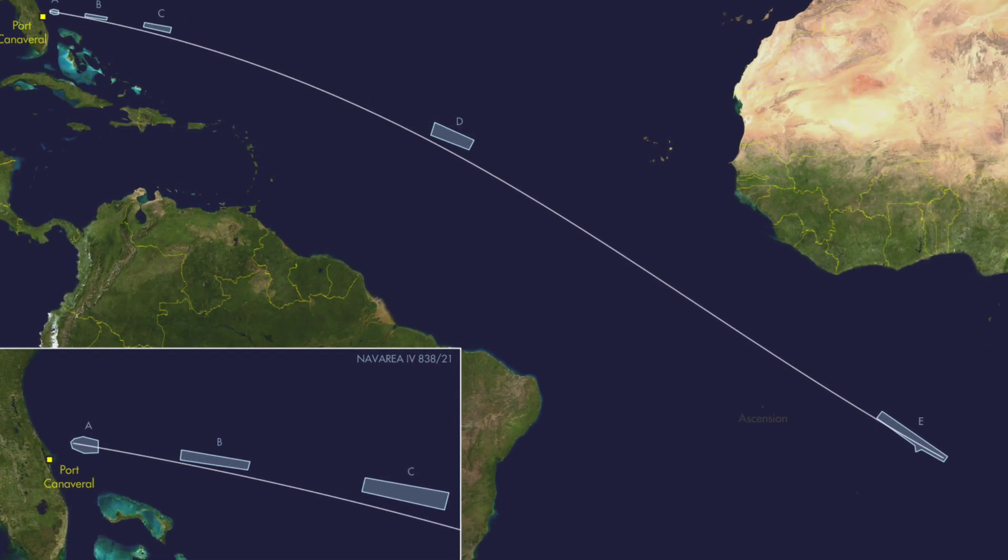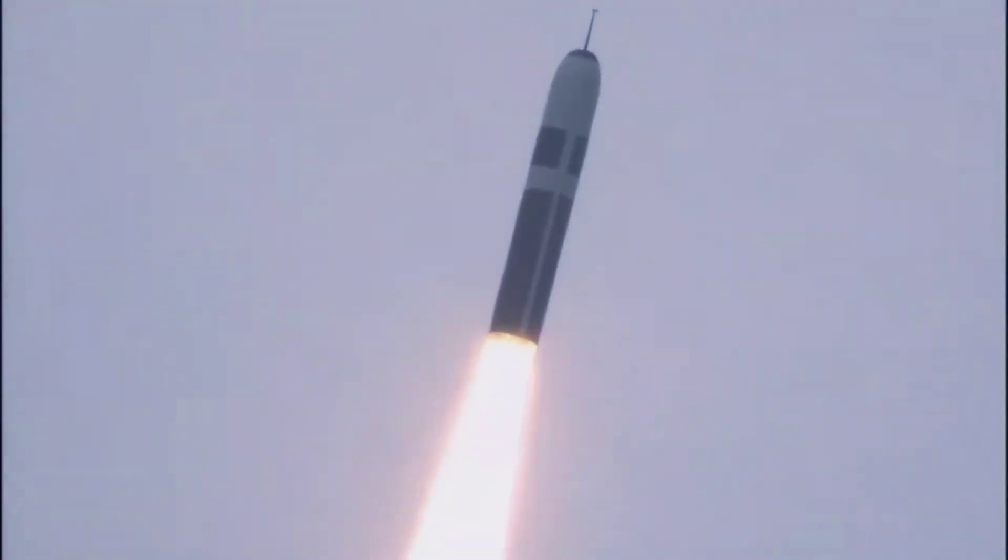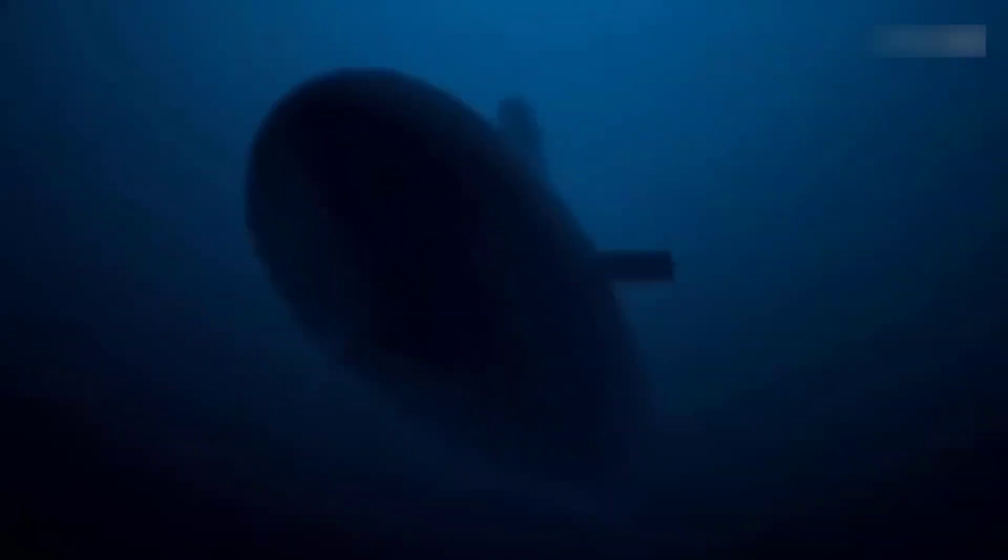Its range exceeds 12,000 kilometers, allowing a submarine hidden anywhere in the ocean to strike targets across continents. What makes Trident II so deadly isn't just its speed, it's its stealth and survivability. These submarines can remain submerged for months, making the missile nearly impossible to detect before launch.